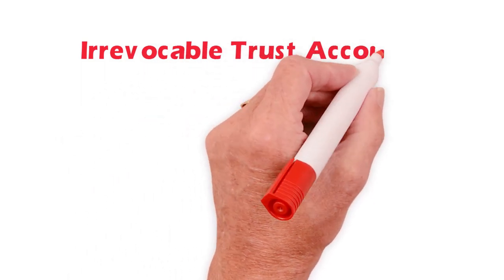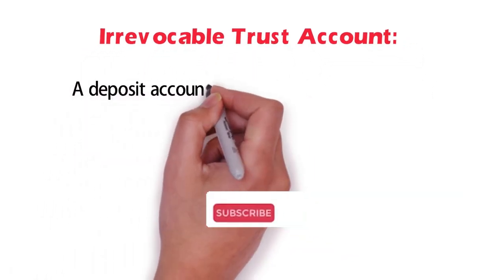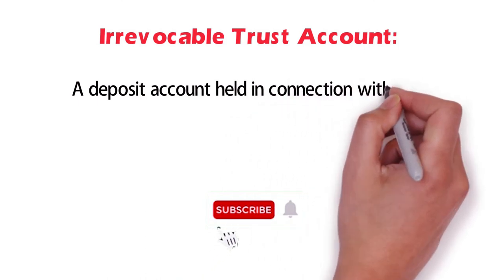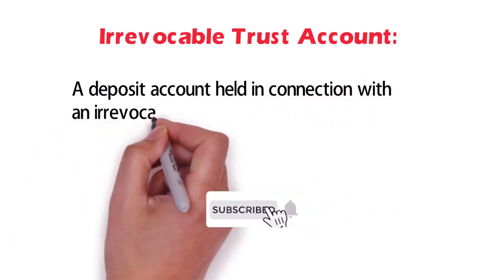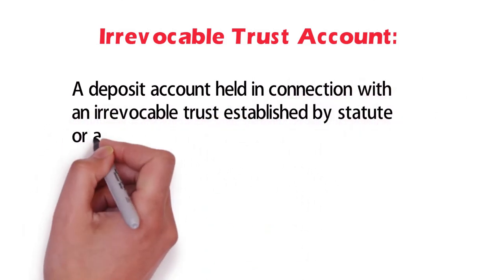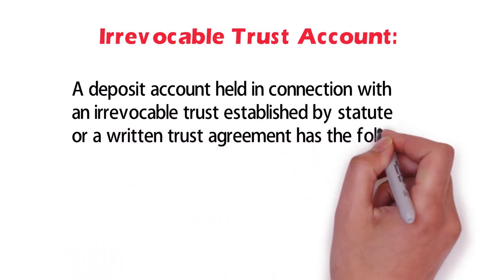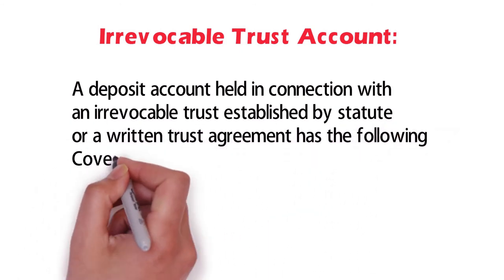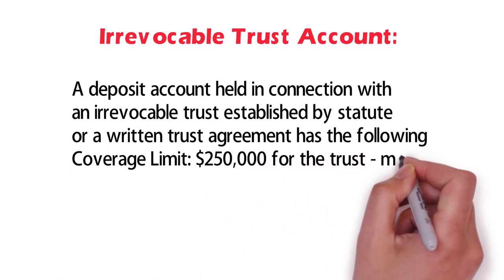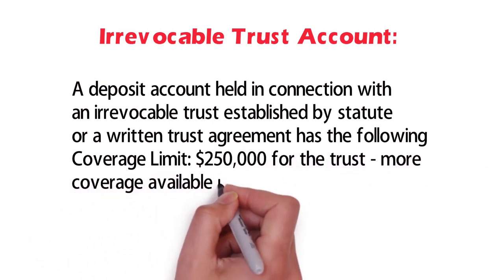An irrevocable trust account is a deposit account held in connection with an irrevocable trust established by statute or a written trust agreement. It has a coverage limit of $250,000 for the trust, with more coverage available if certain requirements are met.